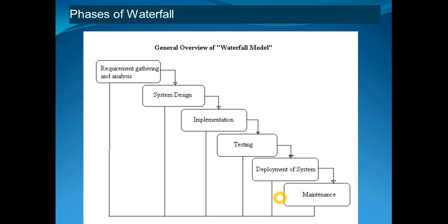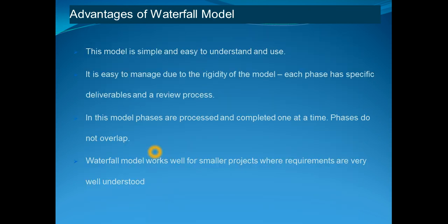After successful completion of deployment and go-live, the next phase is maintenance, in which the vendor provides all types of necessary support to the customer. As you can notice from the figure, all phases progress in the downward direction with no movement in the upward direction — this is the main feature of the waterfall model.